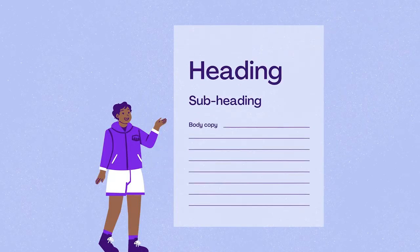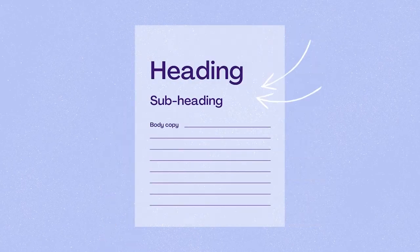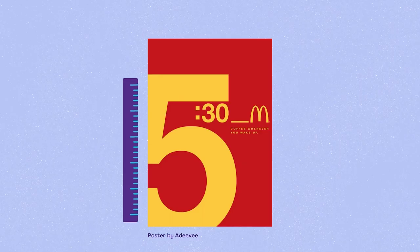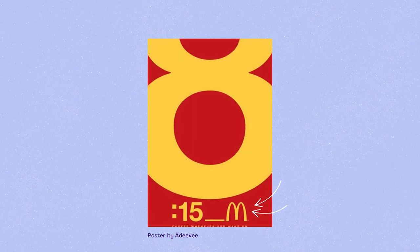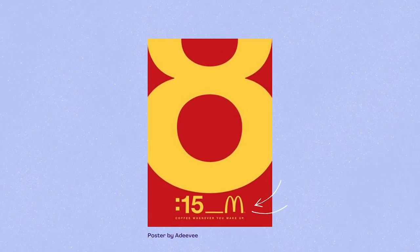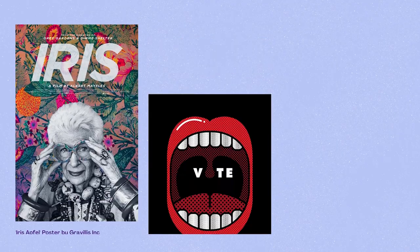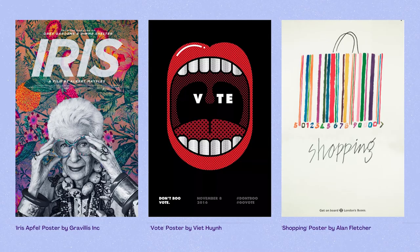Hierarchy is about designing the composition to visually signal the importance of elements. Make more important elements bigger and bolder than less important elements, which might be smaller and fainter. Scale is often used to communicate hierarchy by drawing attention toward and away from certain elements, thus signifying their importance to the communication. Look at these examples and where the importance is being placed.